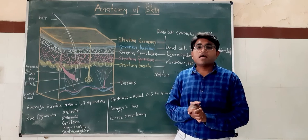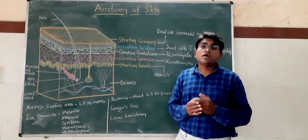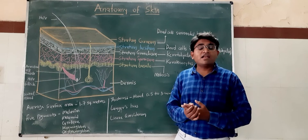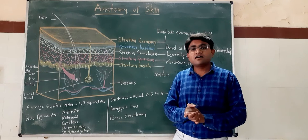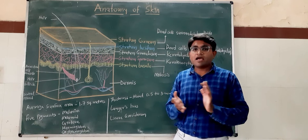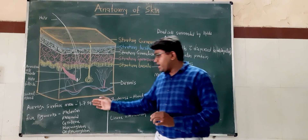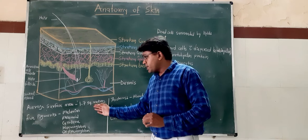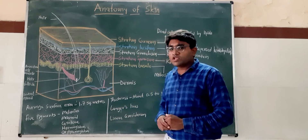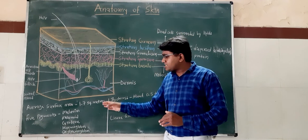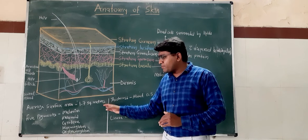Hair, nails, the sweat glands and the sebaceous glands are the appendages of the skin. The average surface area of the skin is about 1.7 square meters.